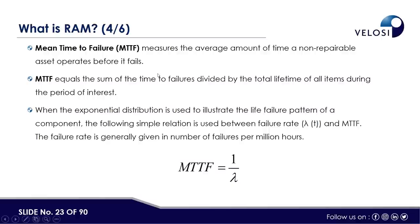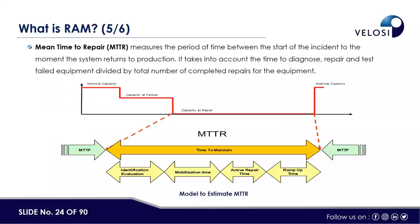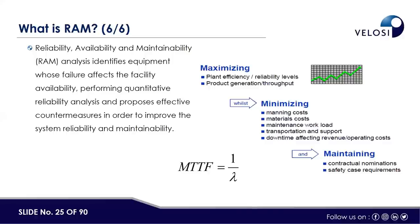Mean time to failure equals the sum of time to failures divided by the total lifetime of all items during the period of interest. MTTF is also one over lambda, where lambda is the failure rate — for example, five failures per year. So one over lambda gives mean time to failure. MTTR is the time taken when a pump, engine, or turbine goes down — covering the time for bringing spare parts, getting work permits, getting access, scaffolding, opening the machine, repairing it, and bringing it back to operation.